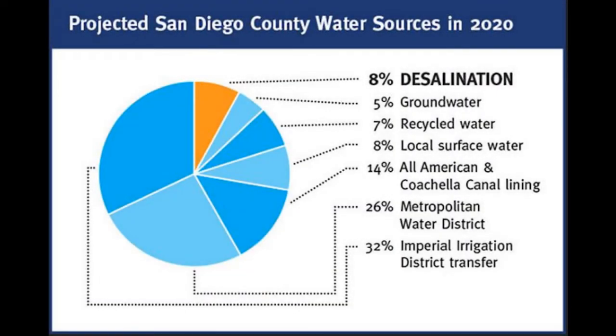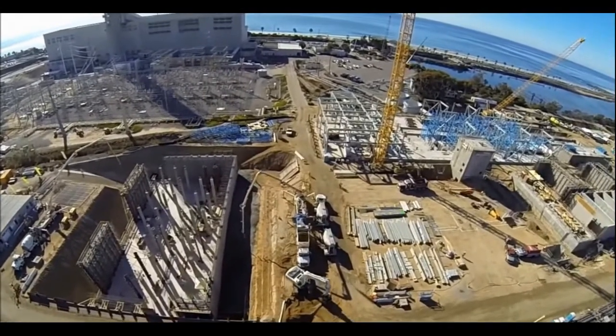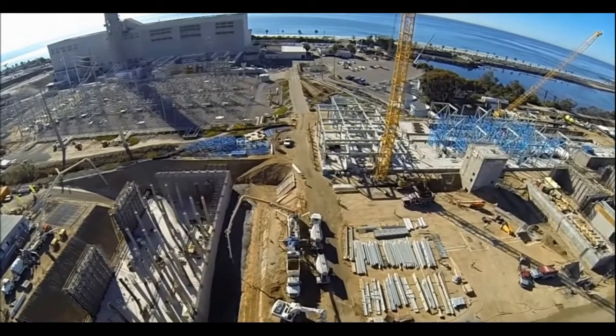Even at such a high production volume, the Carlsbad plant supplies only about 7% of San Diego's water demand. And if the demand is so high, why do we not just build more plants to meet the need?